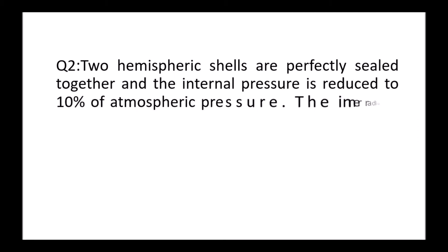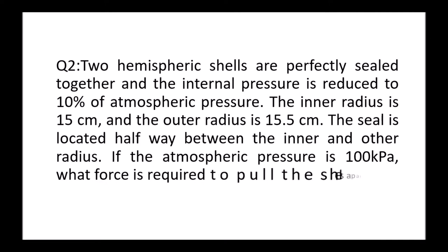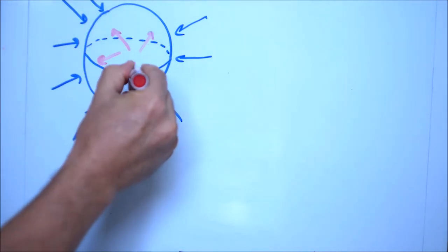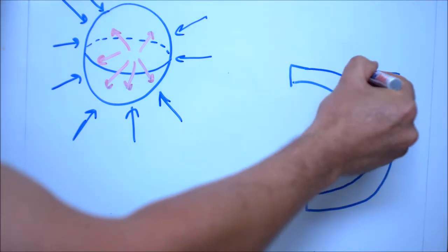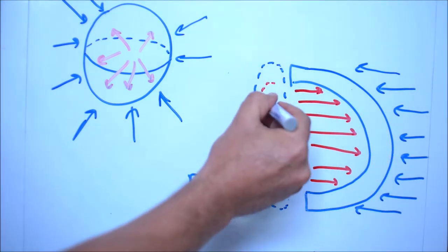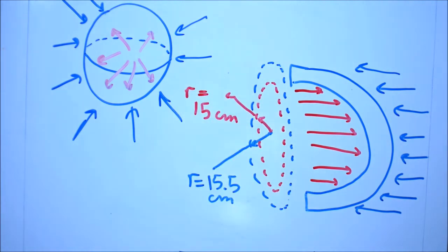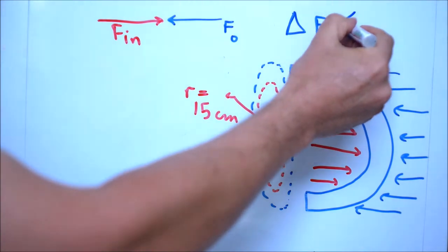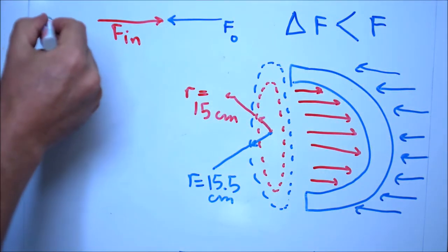Second question: we have two hemispherical shells with a wall thickness of half centimeter. The inner diameter is 15 centimeter and the outer diameter is 15.5 centimeter. We applied vacuum to the spherical assembly. The vacuum is 10% of atmospheric pressure, so atmospheric is 100 kilopascal and the vacuum will be 10 kilopascal. The pressure from outside is atmospheric and the pressure inside is the vacuum pressure. We draw the outer force perpendicular to the cross-section area with radius 15.5 centimeter, then do the force balance.